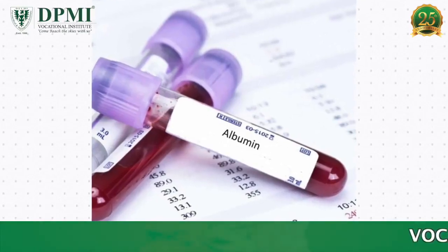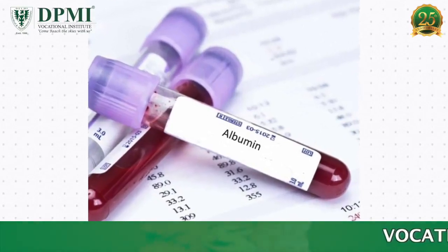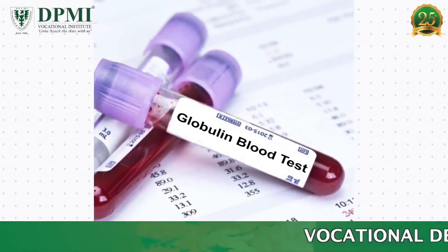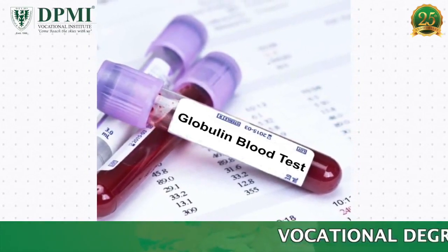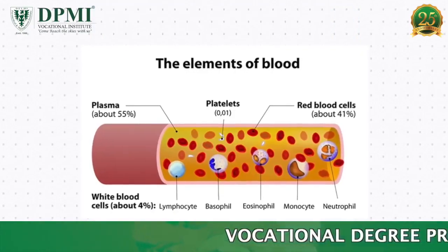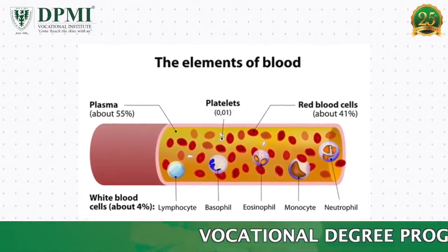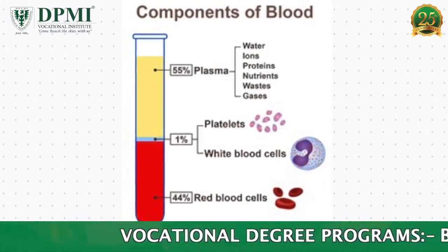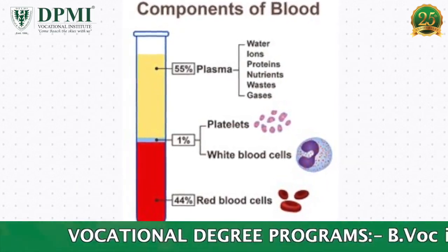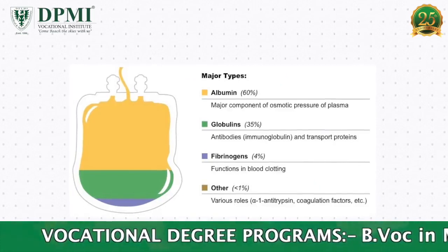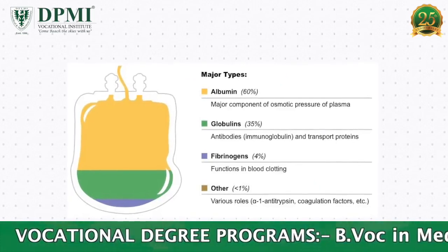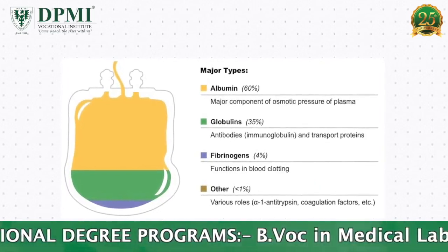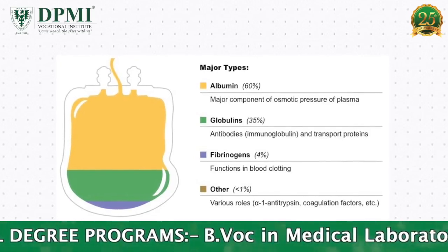Determination of Albumin, Globulin and A to G Ratio. About 7 to 8 percent of plasma contains proteins which are called plasma or serum proteins. It comprises the major part of the solids of the plasma.